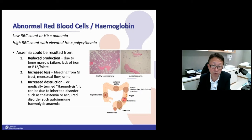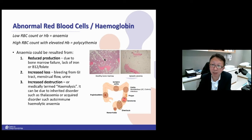Reduced production: all red cells, white cells, and platelets come from the bone marrow. Bone marrow issues can be due to primary bone marrow disease — where the marrow is diseased and cannot produce cells — or due to nutritional problems. When you lack iron or B12/folate, you will have anemia. This picture shows a healthy bone marrow — quite pinkish — versus aplastic anemia, a type of bone marrow failure syndrome, which appears very empty.